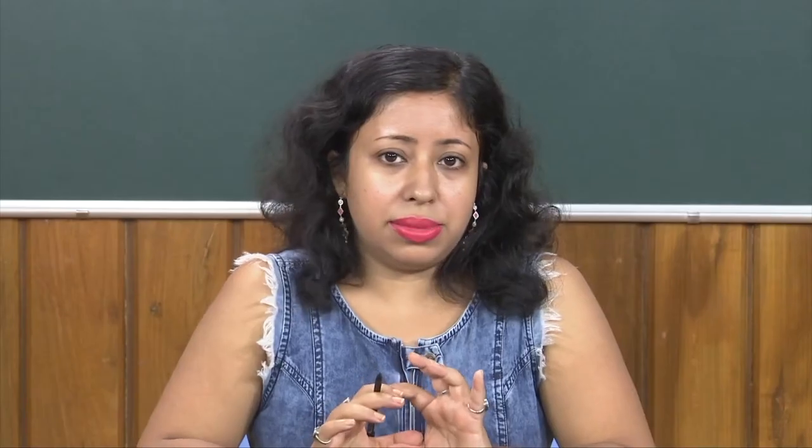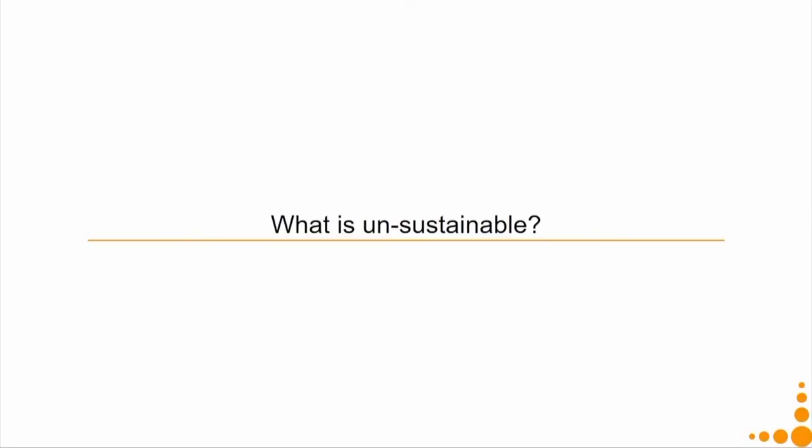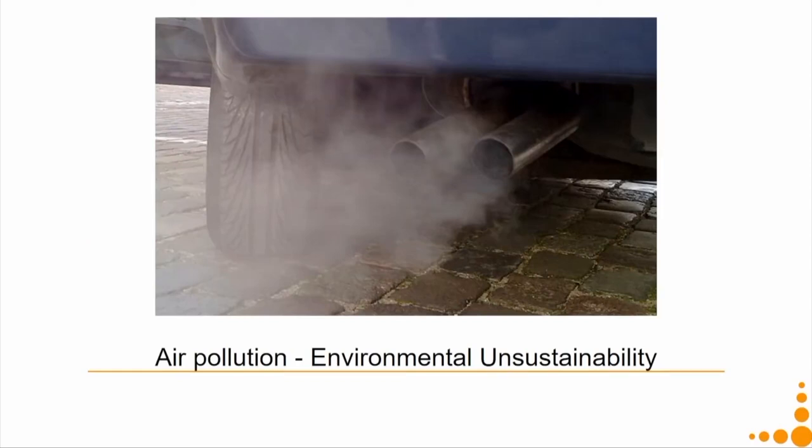Before trying to understand what sustainability is, it is very important to understand what the unsustainabilities are and why we actually need to move towards sustainability. In the next lecture we will discuss the definition of sustainability and sustainable development. The third lecture of this module will cover how we achieve this through design. Coming to the first topic — what is unsustainable — let us discuss this through some examples.